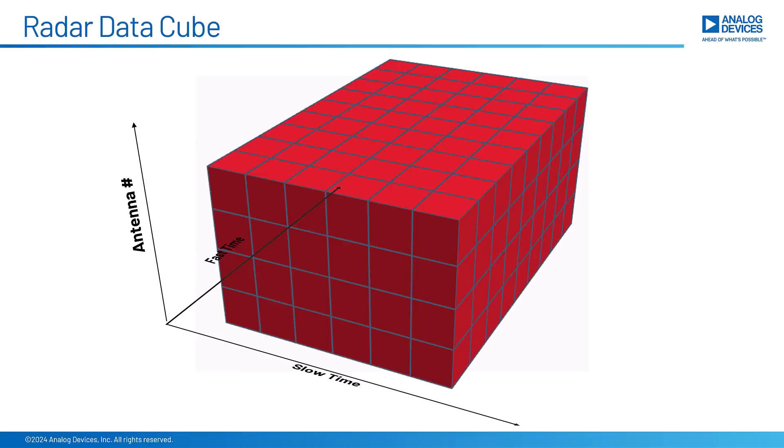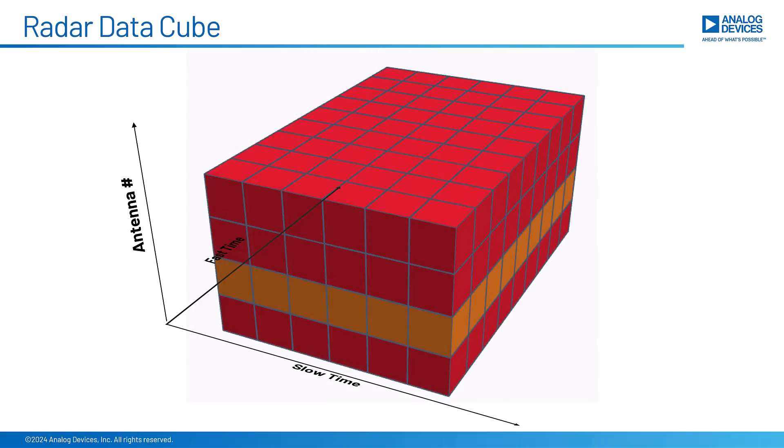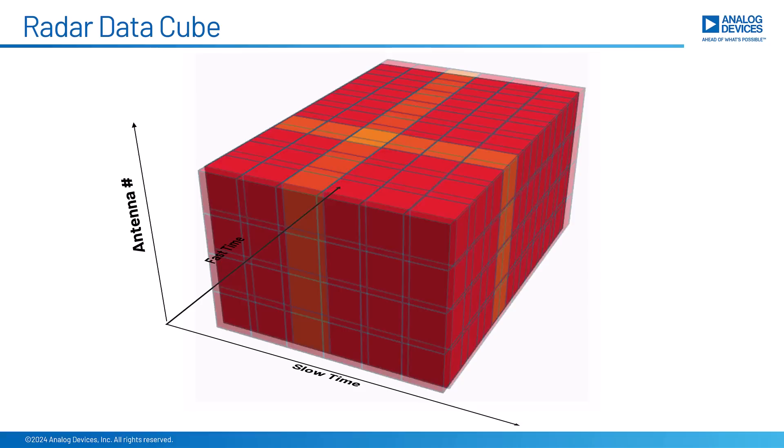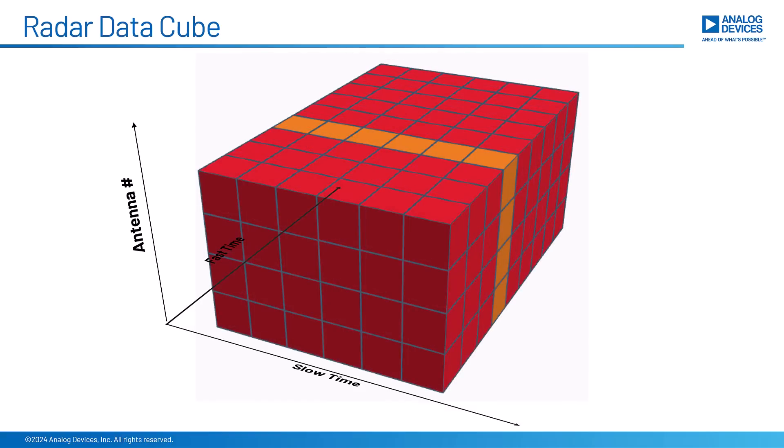And with the data cube, you can slice it up in interesting ways. So here's a slice that is just one element. And here's a slice that is all of the elements in one chirp. And here's a slice that is all of the elements in one range bin.